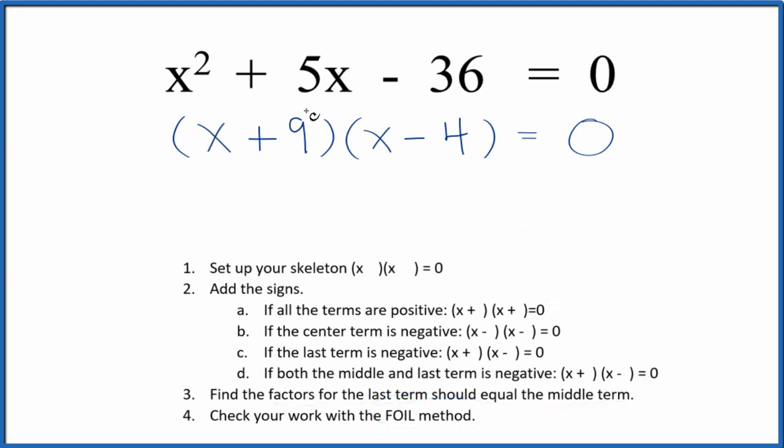So the first term, x times x, that's x squared. Outside, x times negative 4, that's negative 4x. Inside, 9 times x is 9x. And the last term, 9 times negative 4 is negative 36 equals 0.